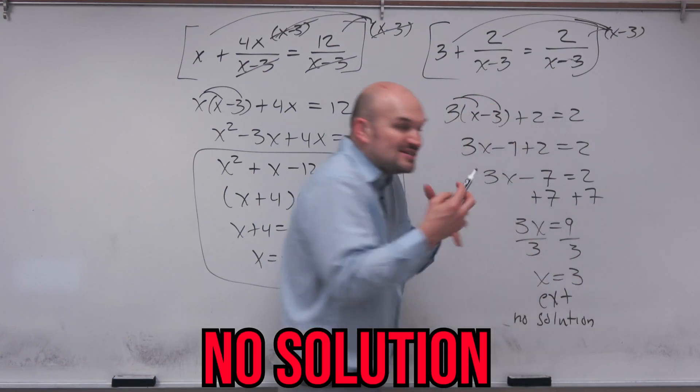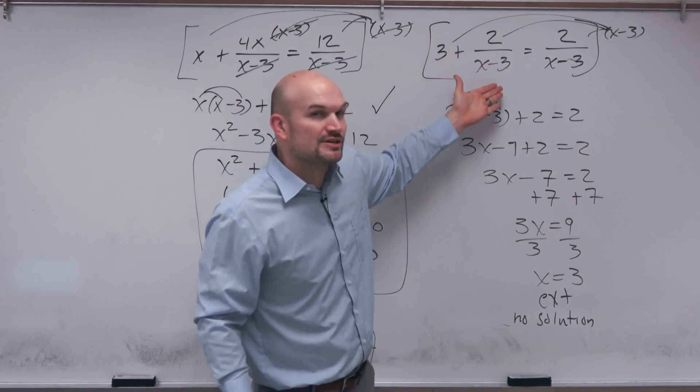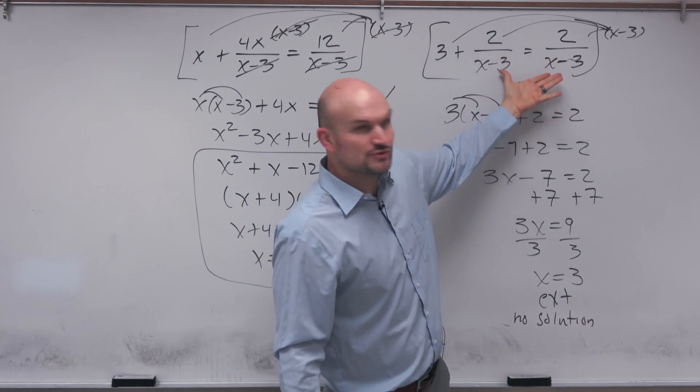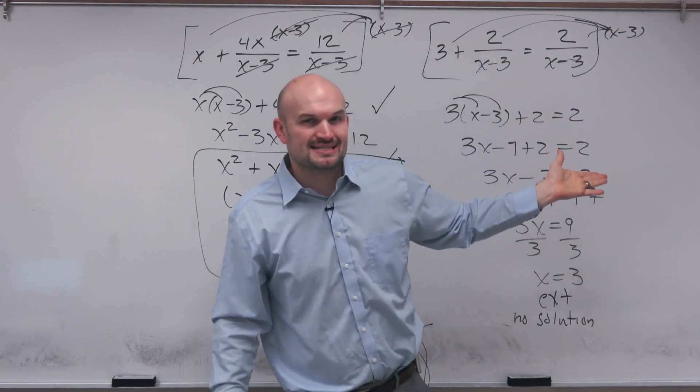And it makes a whole bunch of sense as well because if you look at this original equation, these are exactly the same. I'm just adding a 3. So of course, if these are supposed to be equal to each other and then you add a 3, they're never going to be equal on that side.